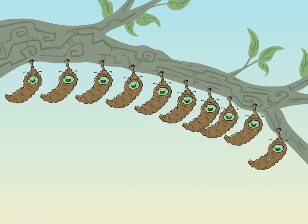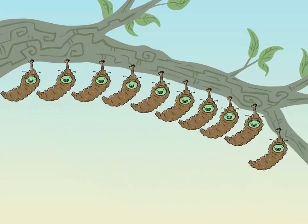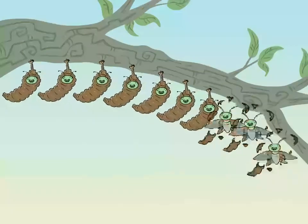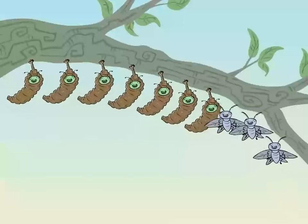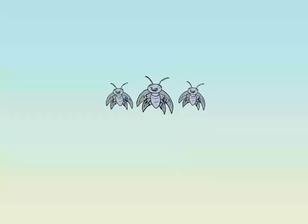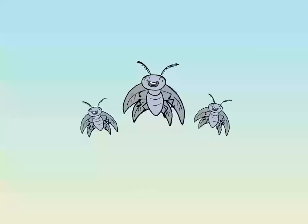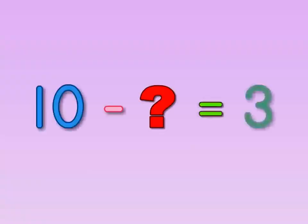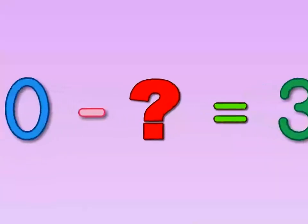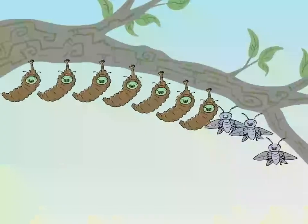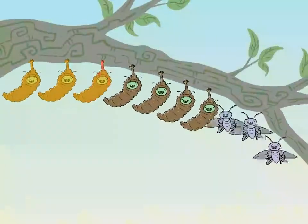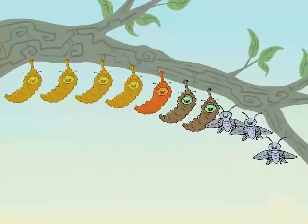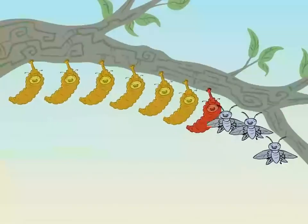10 little caterpillars in cocoons. 3 moths hatch, and the others will soon. How many moths will soon be free? Count backwards to 3, and then we'll see. 9, 8, 7, 6, 5, 4, 3.